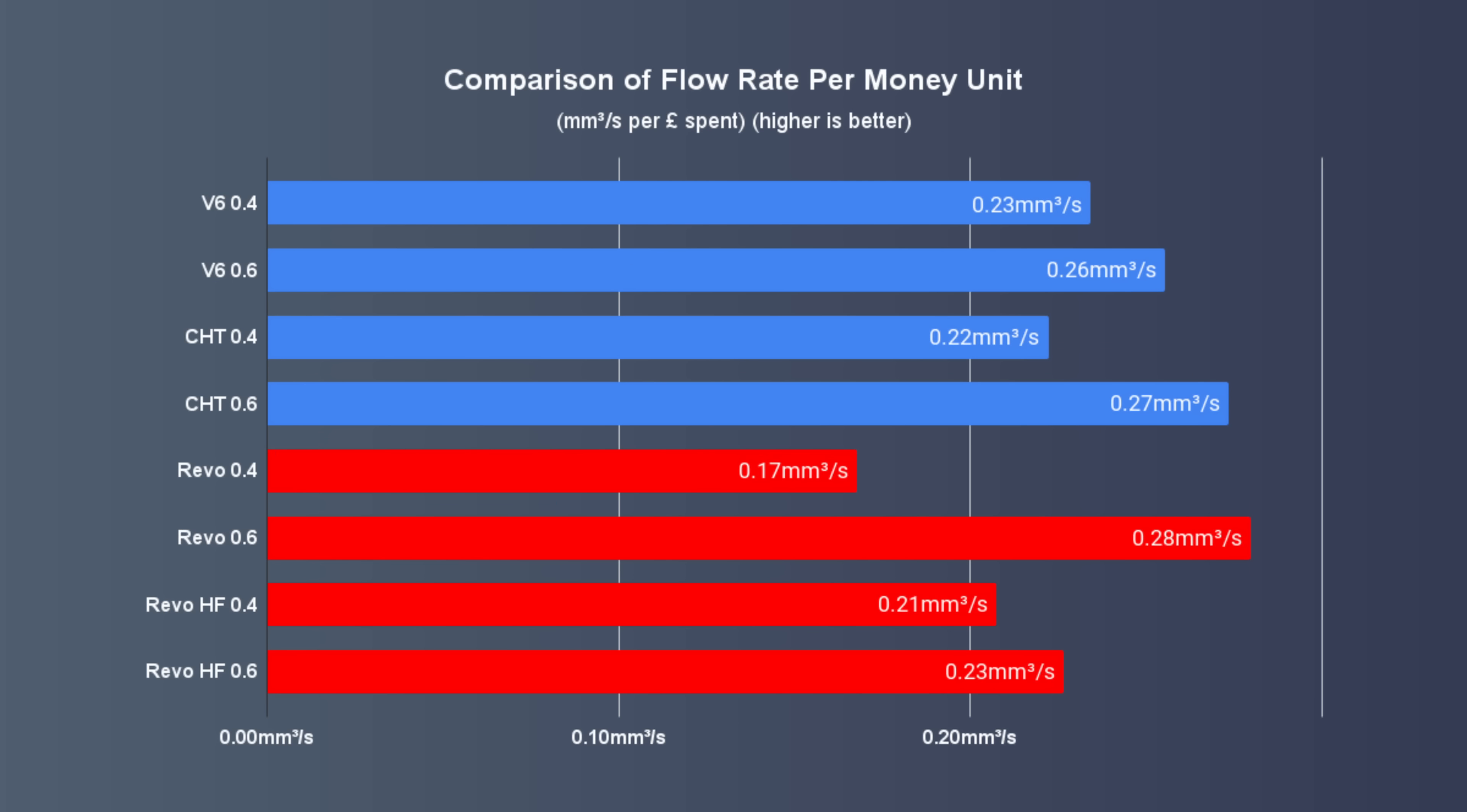The last thing to consider is performance relative to price. So how much flow rate do you get for each pound that you spend? Revo 0.6 represents the best value for money with the CHT 0.6 almost drawing, while Revo 0.4 performs the worst in this comparison. Overall Revo and Rapido are fairly similarly priced so while Revo catches up a little it's not enough to take the lead.